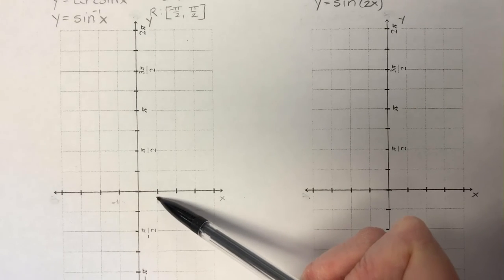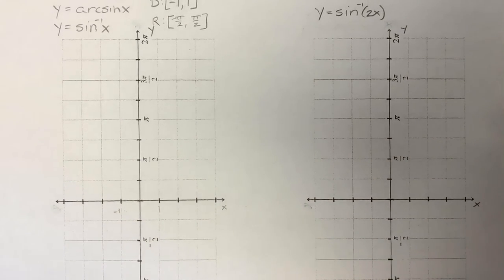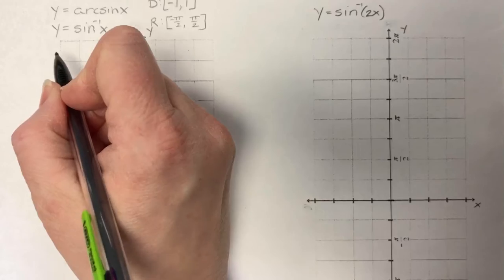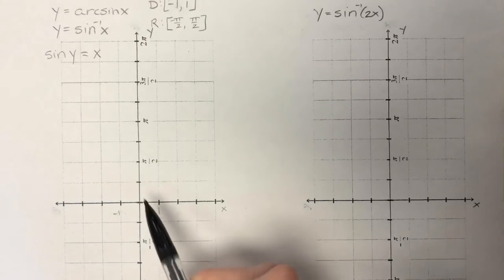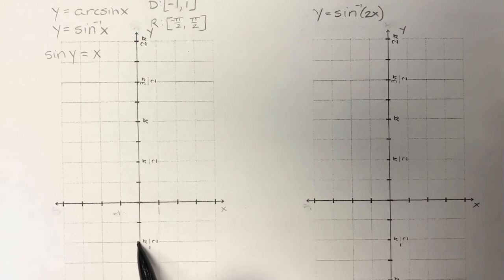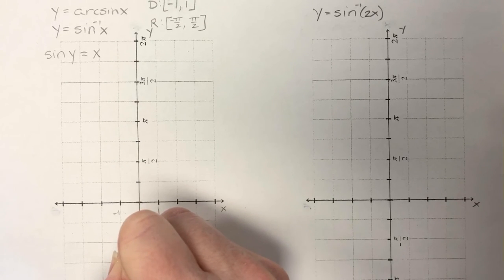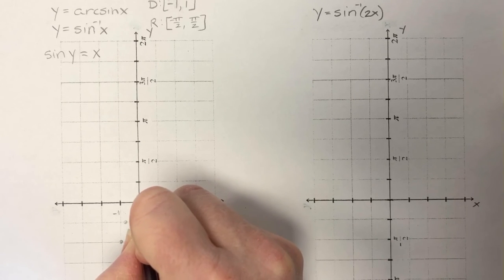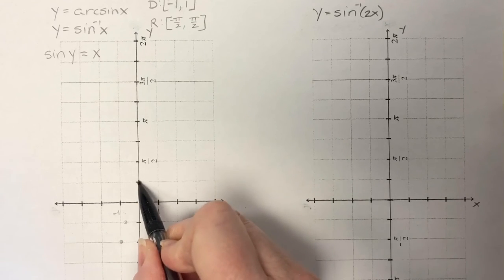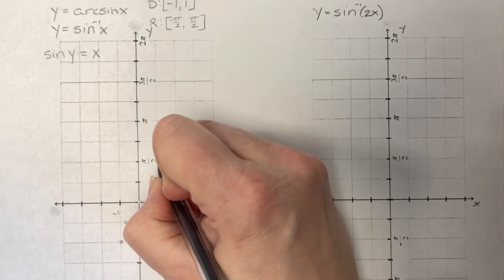The graph is going to go from negative 1 to 1, and the range is going to be from negative pi halves to pi halves. Some people find it helpful to rewrite this as: the sine of y is equal to x. Then you can say the sine of negative pi halves is negative 1, the sine of negative pi fourths is negative square root of 2 over 2, which is about negative 0.7, the sine of 0 is 0, the sine of pi fourths is positive 0.7, and the sine of pi halves is 1.